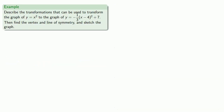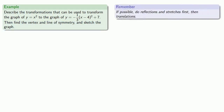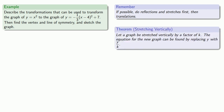For example, let's consider the graph y equals minus one-third times x minus 4 squared plus 7. Let's describe the transformations, find the vertex and line of symmetry, and sketch the graph. In this process, do reflections and stretches first, then translations. We notice that we have the factor minus one-third, so let's identify if there is some sort of vertical stretch or possibly a reflection.